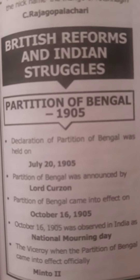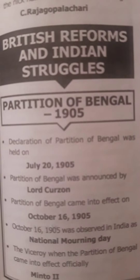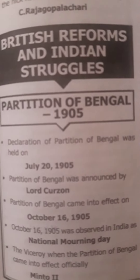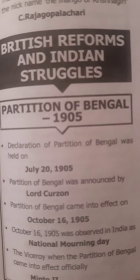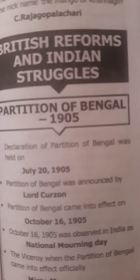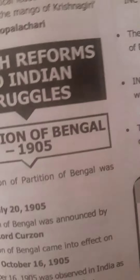Partition of Bengal 1905. The declaration of the Partition of Bengal was held on July 20, 1905. The Partition of Bengal was announced by Lord Curzon. The Partition of Bengal came into effect on October 16, 1905.